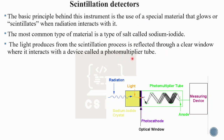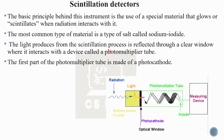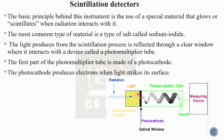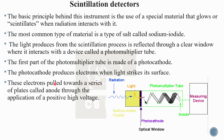The light passes through a clear window where it interacts with a device called a photomultiplier tube. The first part of the photomultiplier tube is a photocathode. The photocathode produces electrons when light strikes its surface. These electrons are pulled towards a series of plates called anodes through the application of a positive high voltage.